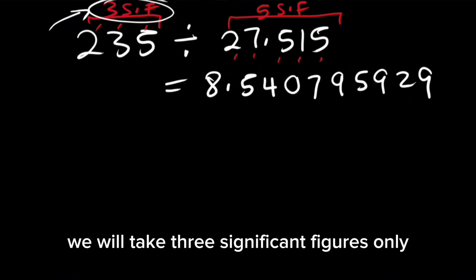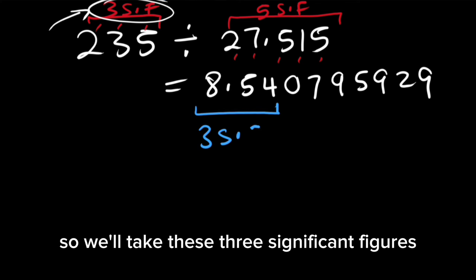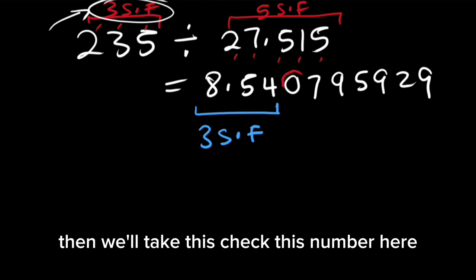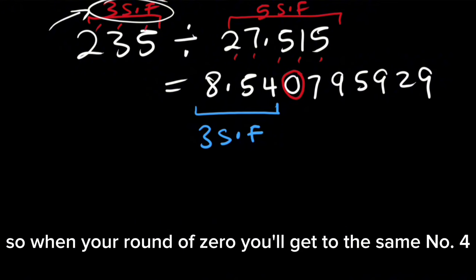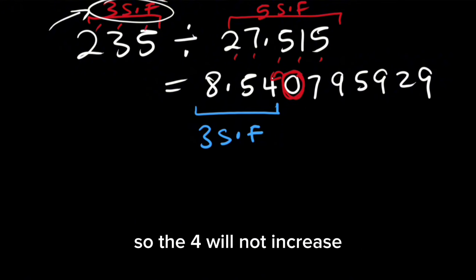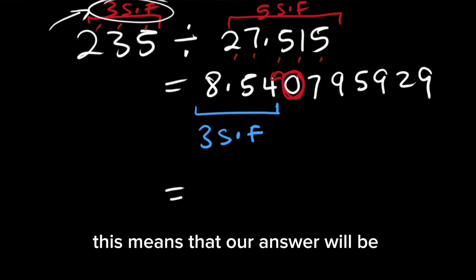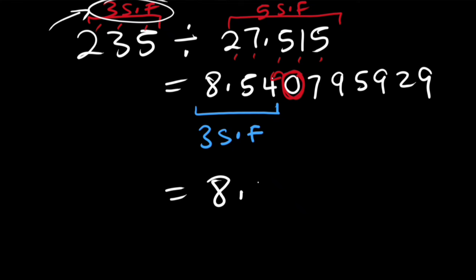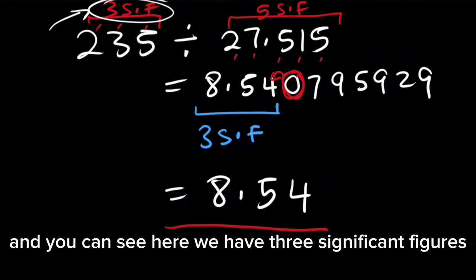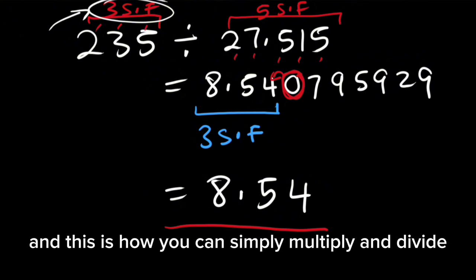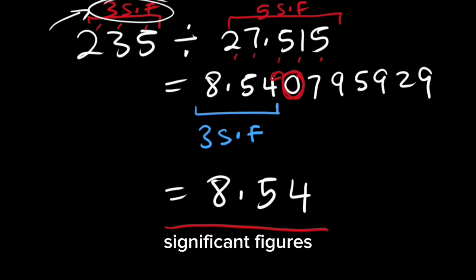We will round off our number to 3 significant figures. We will take these 3 significant figures and then check the next digit. When you round off the 0, you'll get the same number — the 4 will not increase. This means our answer will be 8.54, and you can see here we have 3 significant figures. This is how you can simply multiply and divide significant figures.